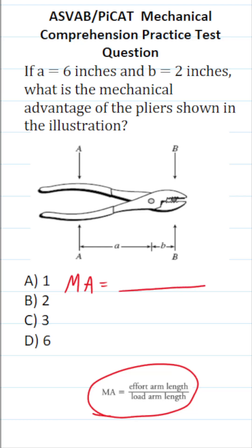So the effort is where you actually squeeze these pliers. You're going to be applying effort or pressure right here. The effort arm length is the distance from where you apply pressure to the fulcrum. This is the fulcrum of the pliers.